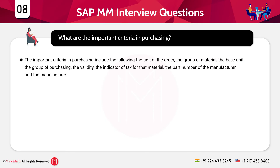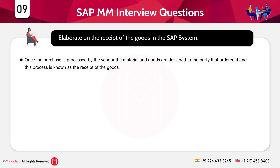The next question is: what are the important criteria in purchasing? The important criteria include the order unit, material group, base unit, purchasing group, validity, tax indicator for the material, manufacturer part number, and the manufacturer itself.